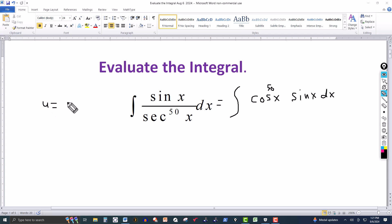We'll let u equal cosine of x. So du will equal the derivative of cosine, which is minus sine of x dx.